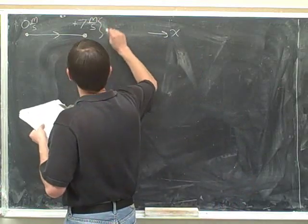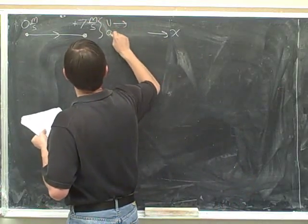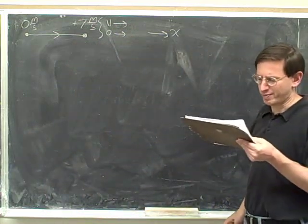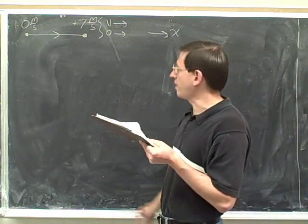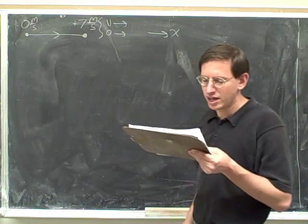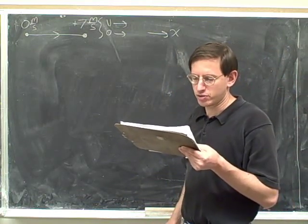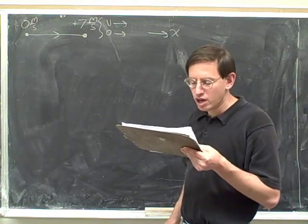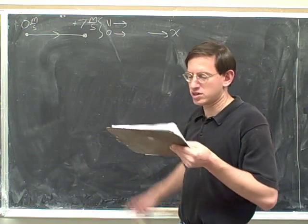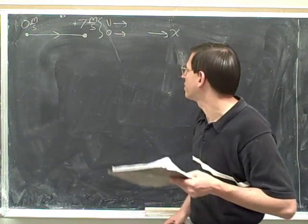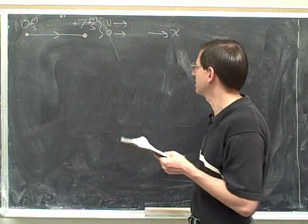We're trying to get into the habit of drawing the velocity and acceleration vectors now for each problem. Well, we decided we're moving to the right, so the velocity is to the right. And remember, the acceleration tells you whether you're speeding up or slowing down. Well, clearly, if we're starting with a speed of 0, then we must be speeding up. So the acceleration is parallel to the velocity.